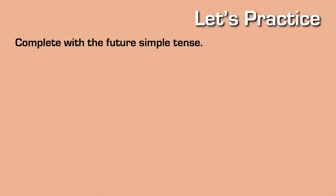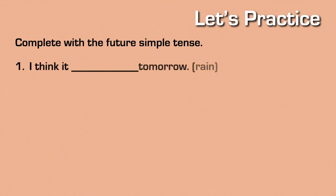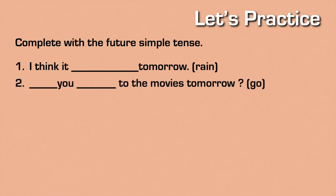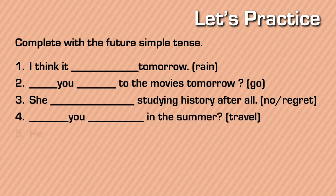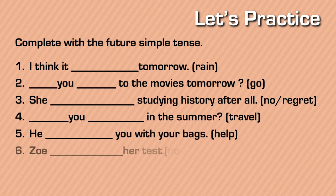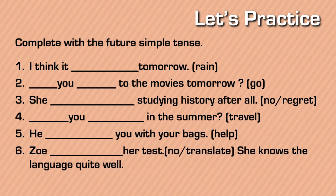So now let's practice. Complete with the future simple tense. Number one: I think it's tomorrow — rain. Number two, number three, and so on. You need to pause the video, and then I will give you the key.